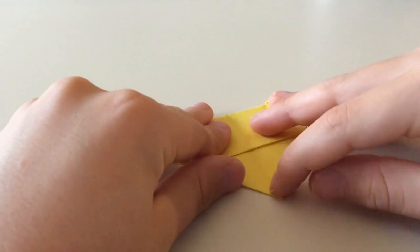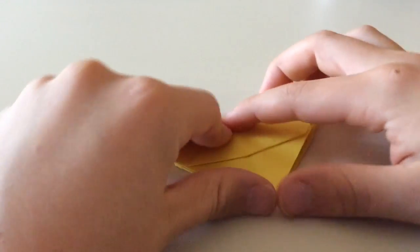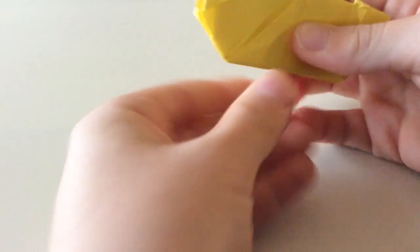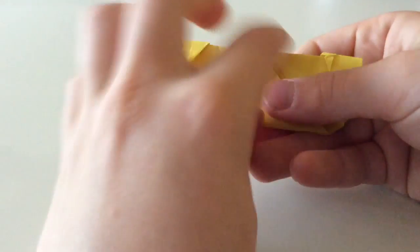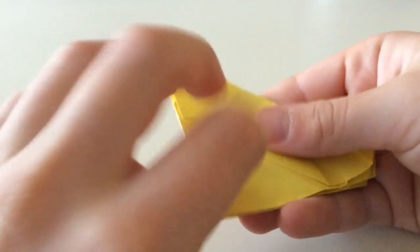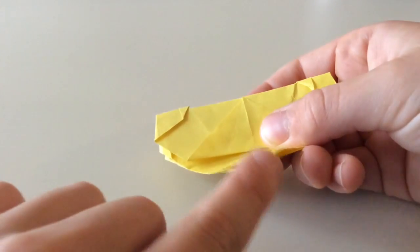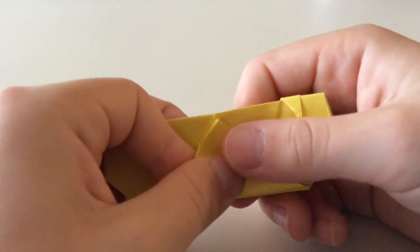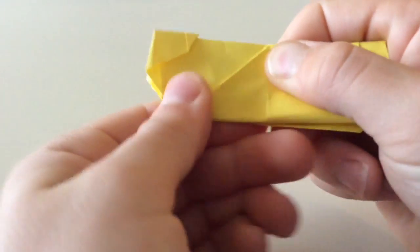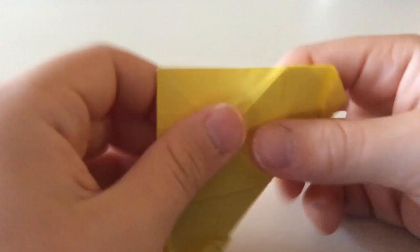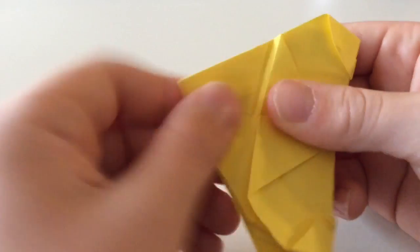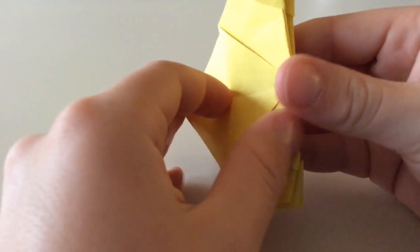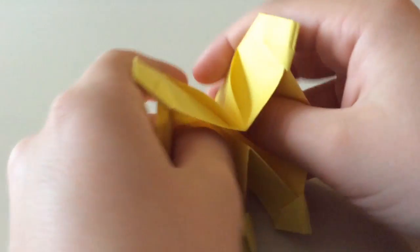Now we're going to take this point and put it right here. Do that. Unfold. Turn it over and do it once more. So this point right here. Make sure to just put it back and forth. And now we're just going to turn it over onto the top and open it up.